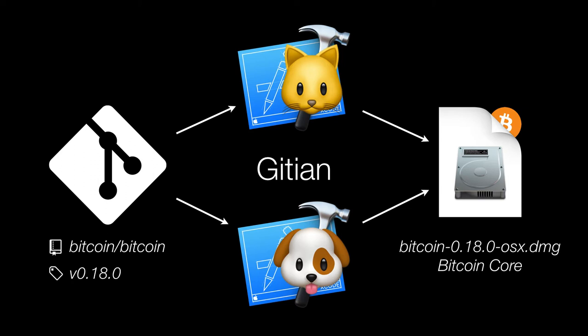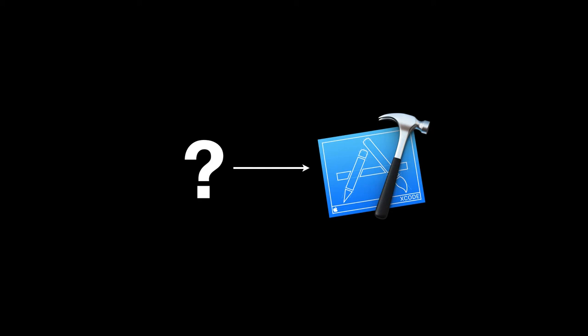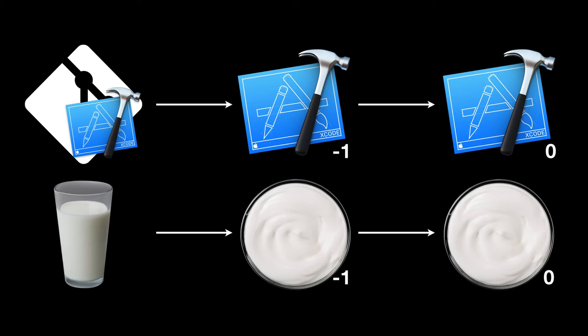The problem with Gitian is that although Bitcoin binaries can be reproducibly built, the tools used to perform that build are hard to audit and could still be malicious, resulting in a reproducibly malicious Bitcoin binary. What compounds this problem is the nature of how toolchains are produced. Where do these compilers and linkers that make up the toolchain come from? I liken the process to an old recipe for yogurt: you take some milk and add it to some existing yogurt you already have to make more yogurt. Similarly, you take some toolchain source code and give it to a toolchain you already have to make more toolchain.